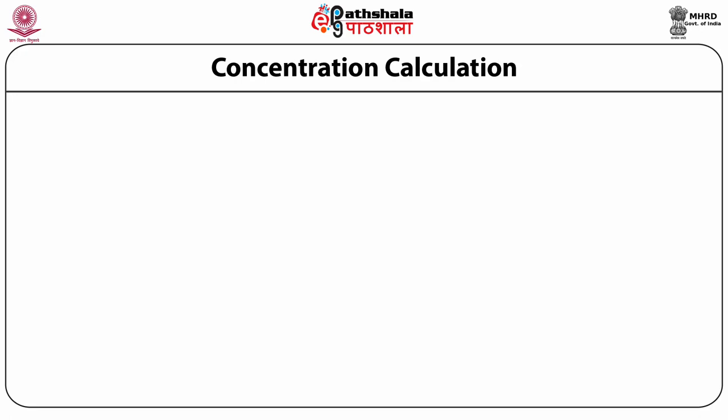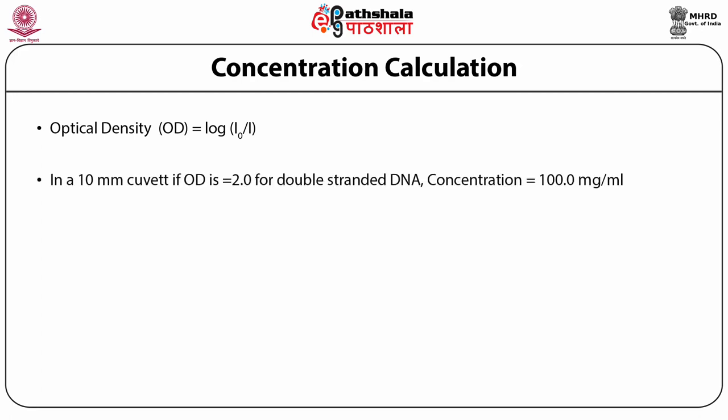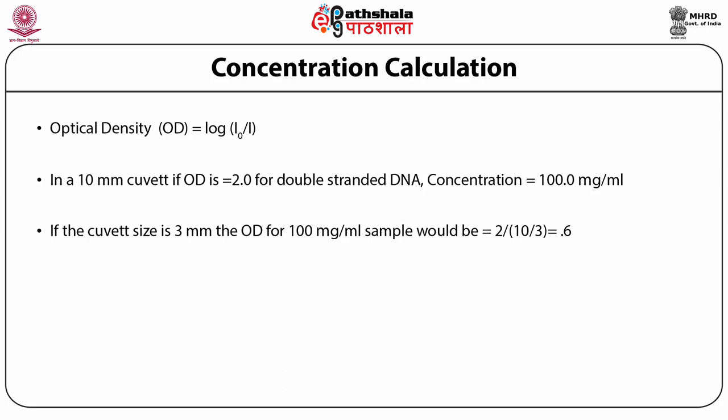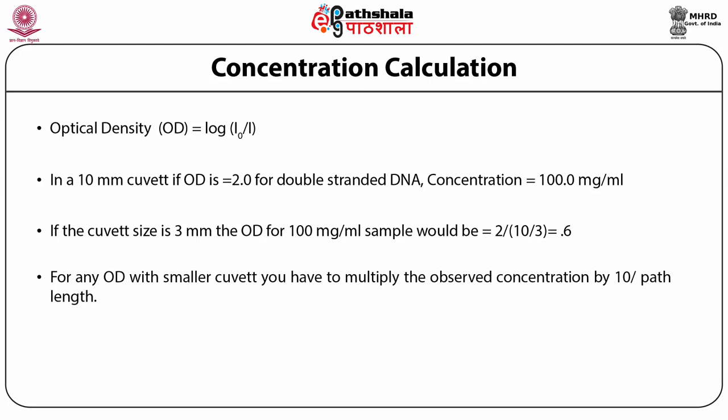For concentration calculation, we first measure the optical density, which is log(I₀/I). In a 10 millimeter cuvette, if OD equals 2 for double-stranded DNA, the concentration will be 100 micrograms per milliliter. But if the cuvette size is reduced to 3 millimeters, the OD for a 100 microgram per milliliter sample would be reduced — it will equal 2 divided by (10/3) = 0.6. For any OD with a smaller cuvette, you multiply the observed concentration by 10 divided by path length in mm, because 10 millimeter is the normal cuvette size. Thus, 0.6 × (10/3) × 50 gives you 100 micrograms per milliliter.